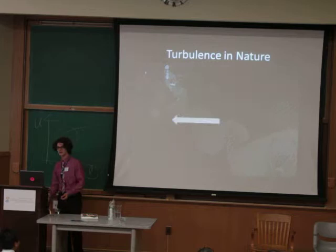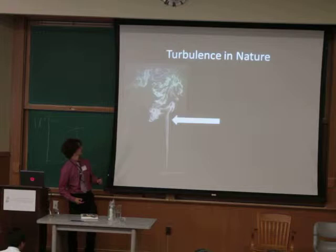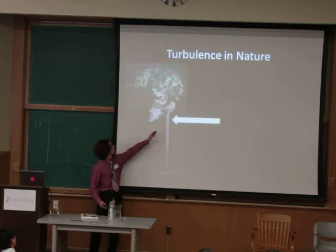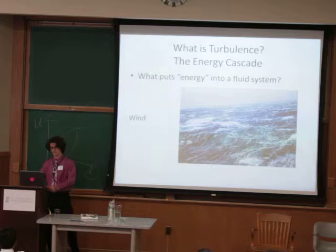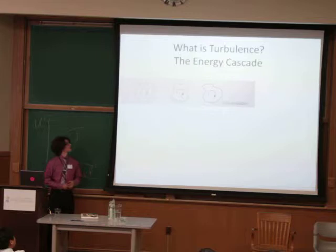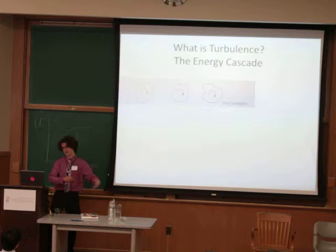Our intuition has already told us what turbulence is. You can see a smooth flow initially, which is what we call laminar flow, which transitions into turbulence — this sort of random, chaotic, more difficult flow. Turbulence is an energetic flow, and what puts energy into a fluid system — examples are wind and gravity — causes a large-scale input of energy that breaks up into random eddies, random features in the flow.